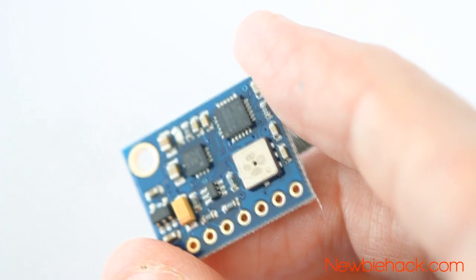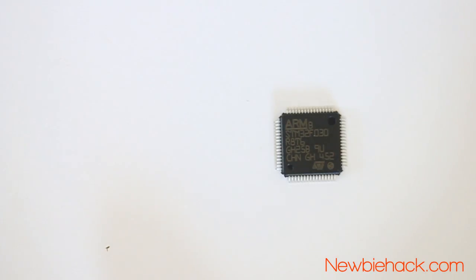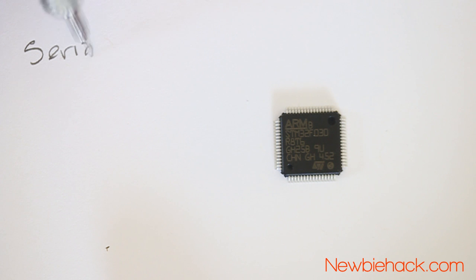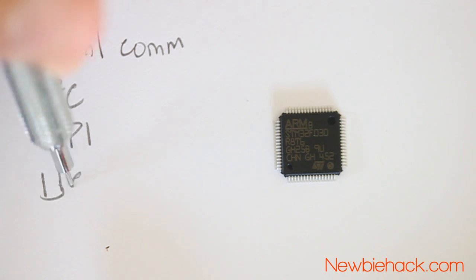Microcontrollers can sense tilt, gravity, movement, and many other types of sensing. They can also communicate with other devices and computers using serial communication such as I2C, SPI, and UART or USART.